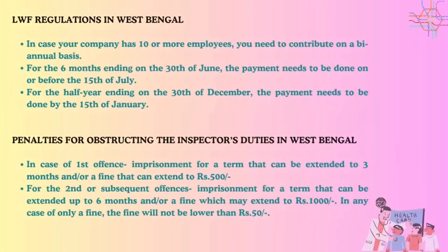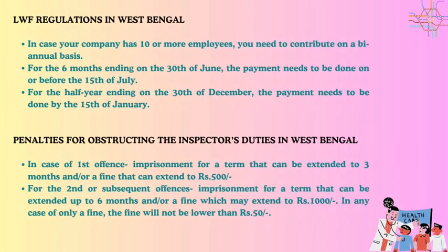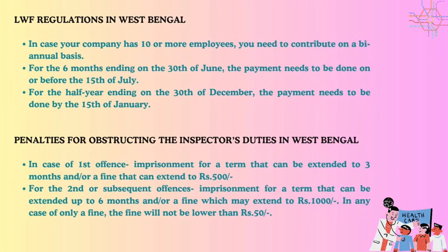LWF regulations in West Bengal: if your company has 10 or more employees, you need to contribute on a biannual basis. For the six months ending on the 30th of June, payment needs to be done on or before the 15th of July. For the half-year ending on the 30th of December, payment needs to be done by the 15th of January. Penalties for obstructing the inspector's duties: for a first offense, imprisonment up to three months and/or a fine up to 500 rupees; for second or subsequent offenses, imprisonment up to six months and/or a fine up to 1,000 rupees. In cases of only a fine, it will not be lower than 50 rupees.